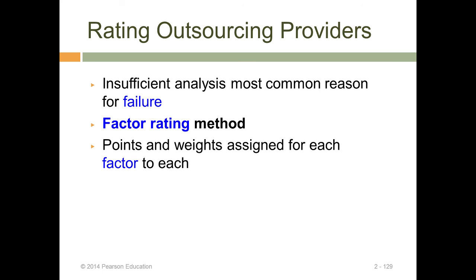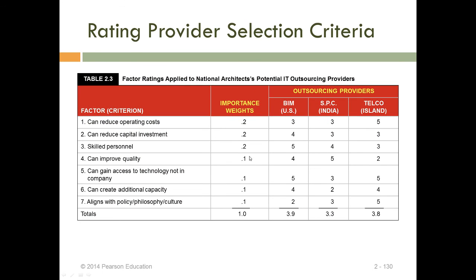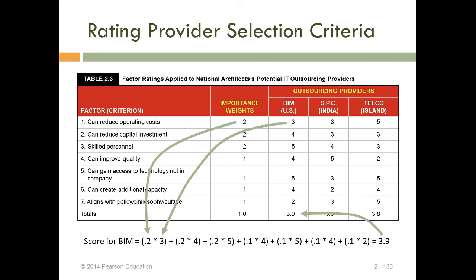It is therefore important to evaluate outsourcing using the factor rating method, which considers multiple criteria. Similar to grading, each criterion is assigned a weight and then scored based on research, panel discussions, and analysis. The option with the best weighted score — either highest or lowest depending on the grading direction — is selected.